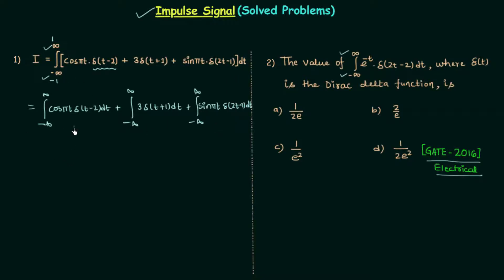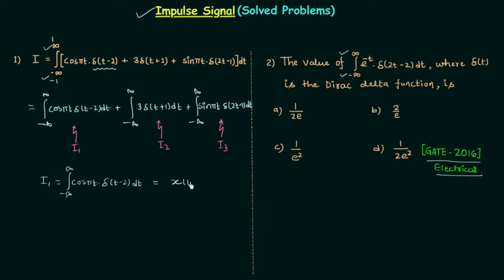Let's call these I1, I2, and I3 and solve them separately. I1 equals the integral from minus infinity to infinity of cos(πt)·δ(t-2) dt. By the direct sifting property, the result is x(t1) where x(t) = cos(πt) and t1 = 2, so we get cos(2π) = 1. Therefore I1 = 1.